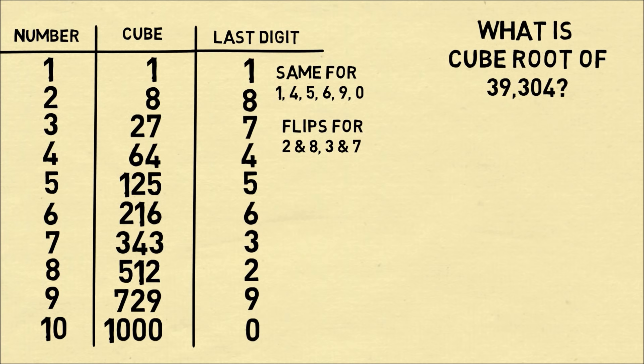So let's do the trick. What's the cube root of 39,304? The first thing I want you to do is look at the last digit. The last digit of 39,304 is 4.